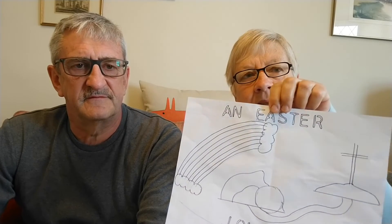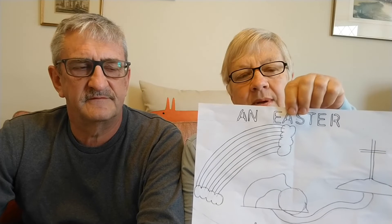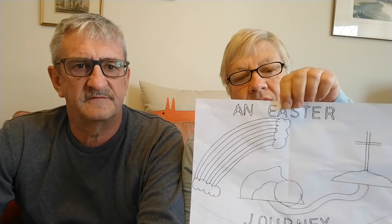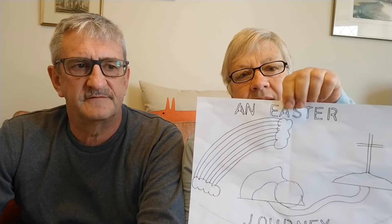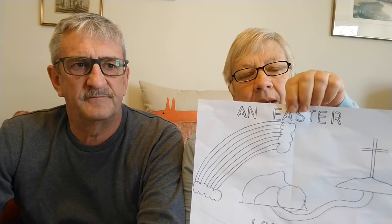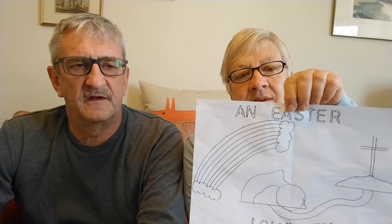There's a cross, the tomb, the pathway, and there's a rainbow — and you might recognize this from all the rainbows appearing in our windows as a message of hope at this difficult time. So color in your rainbows, your tomb, and your crosses, and maybe you can put these in the window with your other rainbows, or your parents could post them onto our Facebook page.